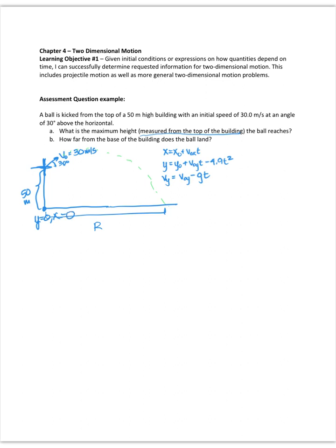That means that my initial x value is zero, but my initial y value is 50. So my x expression is going to be given by 30 times cosine of 30 times t, because x naught is zero. That ends up to be, if I multiply that out, it's 25.98 t.